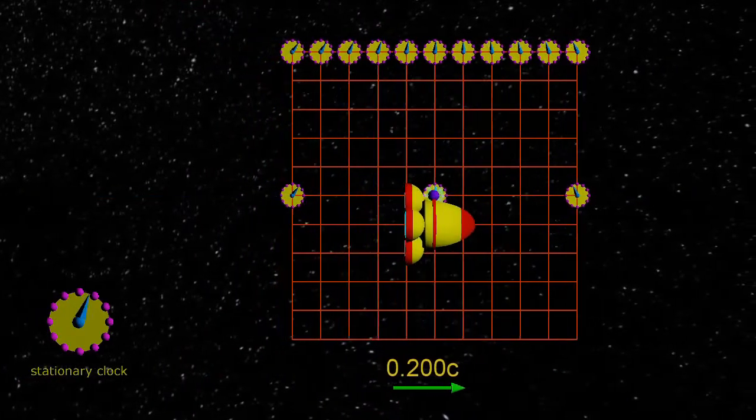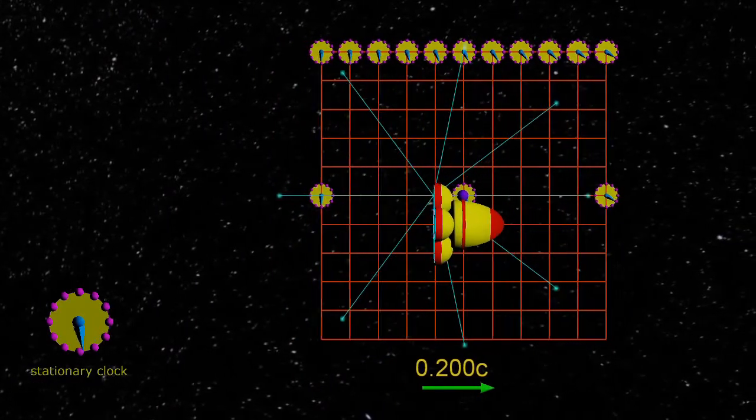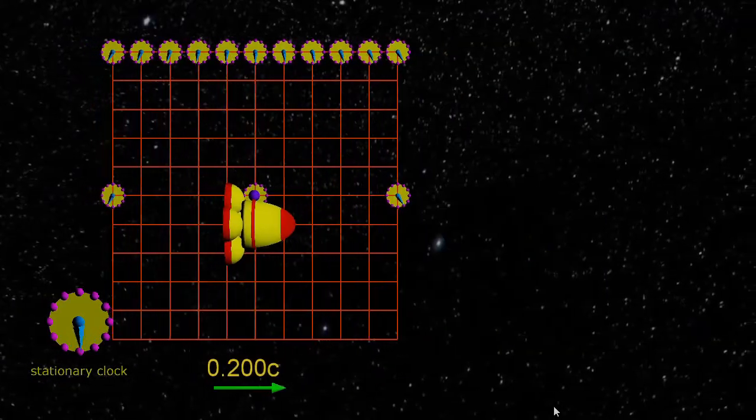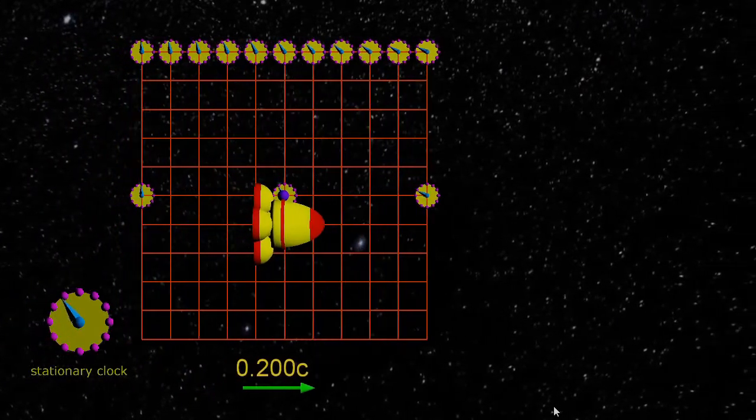Now it's important to remember, as far as occupants of the yellow spacecraft are concerned, all the clocks are synchronized. We can see why the clocks aren't synchronized.